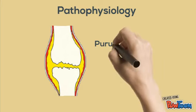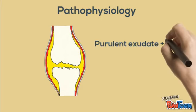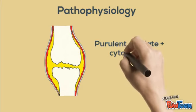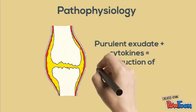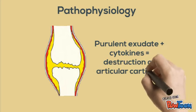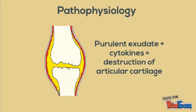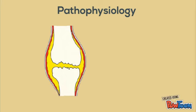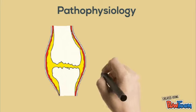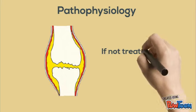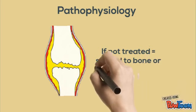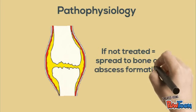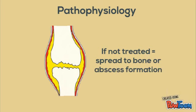The accumulating pus results in destruction and erosion of articular cartilage by bacterial and proteolytic enzymes released by the synovial and inflammatory cells. If the infection goes untreated, there may be spread to underlying bone or the infection may burst out of the joint to form abscesses and sinuses.